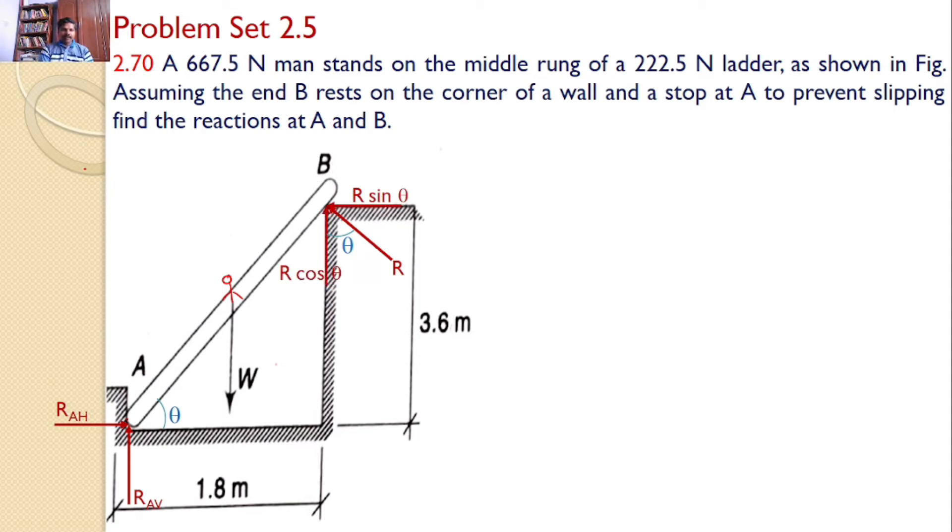The length of AB can be found using the equation root of 3.6 squared plus 1.8 squared, which equals 4.02. The weight acts exactly at the center, hence this distance is 2.01 and this distance is 2.01.